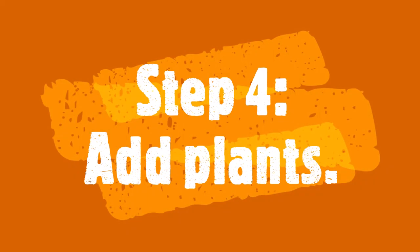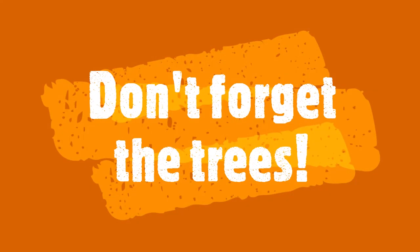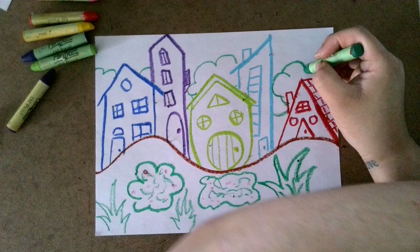Step four: add plants. We are going to use curvy lines to create some beautiful bushes, and lines that meet at the end to create some pointy plants. I almost forgot — we also need to add trees. I'm going to add trees by putting some curved marks back here using my green color.